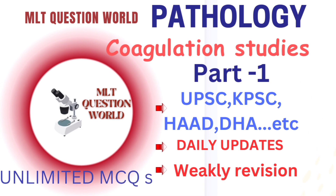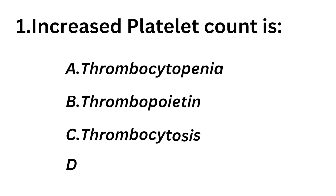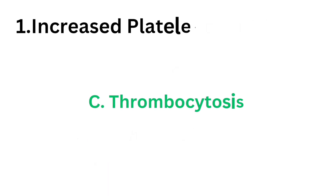Today we are discussing questions from pathology, coagulation studies part 1. First question: increased platelet count is — option A thrombocytopenia, option B thrombopoietin, option C thrombocytosis, option D all the above. The correct answer is option C, thrombocytosis.